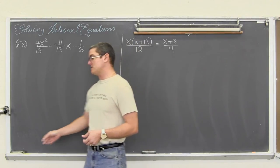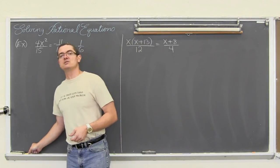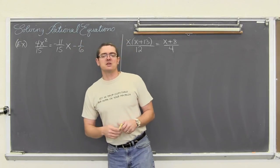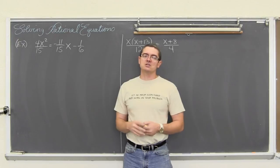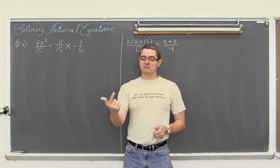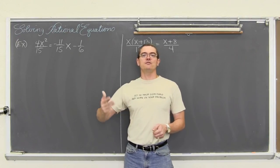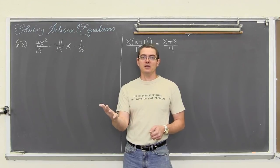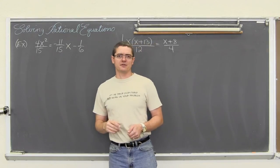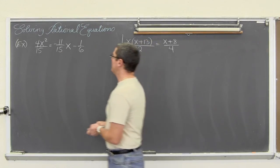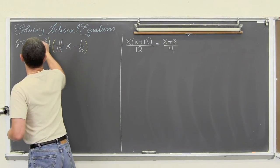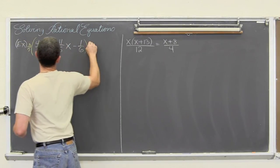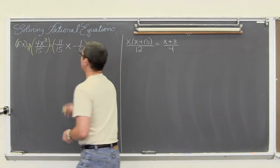What number does 15 and 6 both go into? You can do prime factorizations and break it down like that, but hopefully at this point, knowing our multiplication tables quite well, we get 6, 12, 18, 24, 30 — 15 goes into 30. So we are going to multiply both sides of this equation by 30.